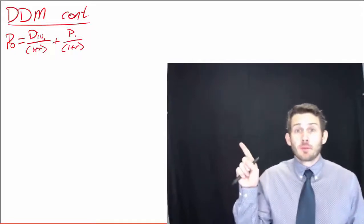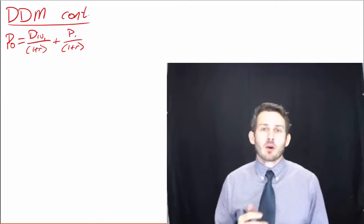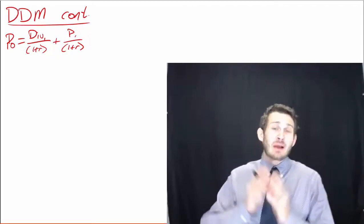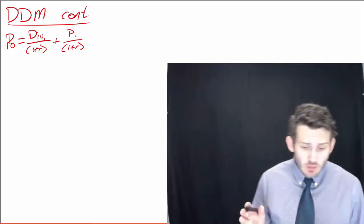All right, so we should be pretty familiar with that formula up there right now. That's our basic discount dividend model formula, which is showing us our dividend yield on top of our capital gains yield.